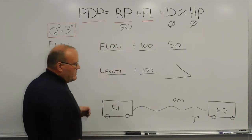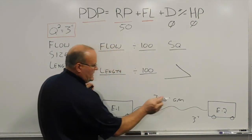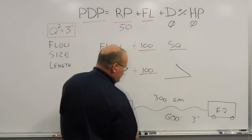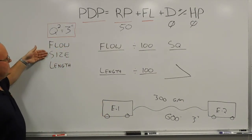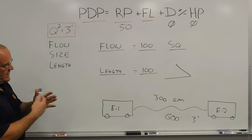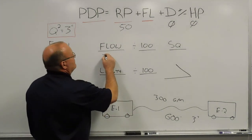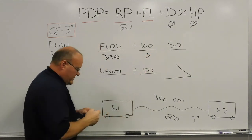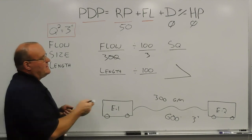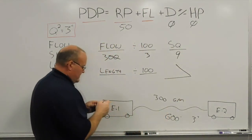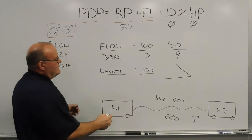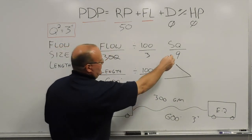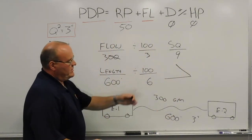In this case we're going to say 300 gallons a minute through 600 feet of 3-inch hose. We go back to flow, size, and length — dealing with 3-inch hose using the Q-squared hand method. First: 300 gallons a minute divided by 100, knocking the zeros off, gives us 3. Using our hand method: 100, 200, 300. 3 times 3 equals 9 pounds of friction loss per 100 feet. Our length is 600 feet: divide by 100, knock the zeros off, that's 6. Multiply 6 times 9 and we end up with 54.